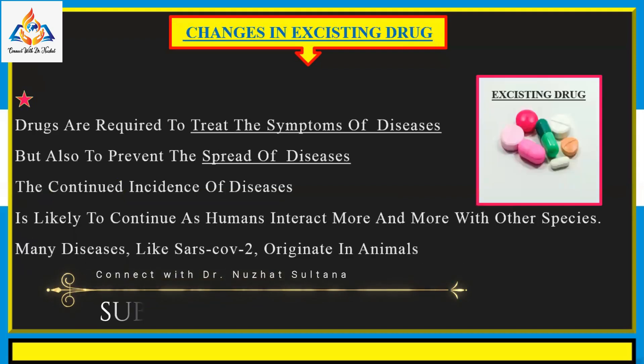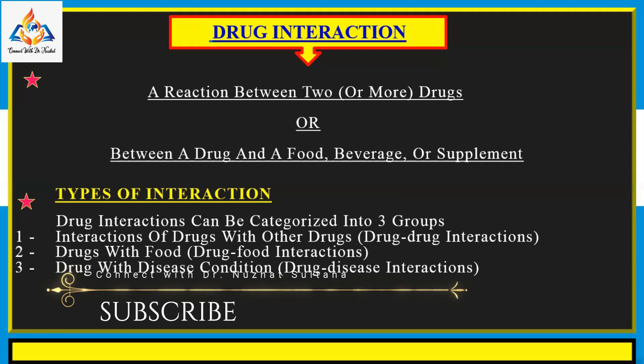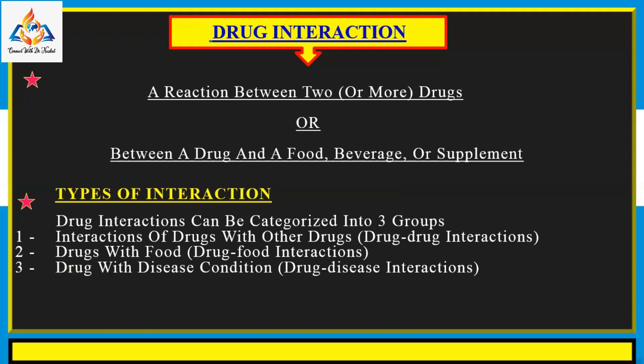Some common drug-drug interactions include theophylline interacting with coumadin, warfarin interacting with macrolides, and warfarin also interacting with non-steroidal anti-inflammatory drugs. Common symptoms of drug interactions include rash, swelling, dizziness, severe nausea and vomiting, diarrhea, or constipation.